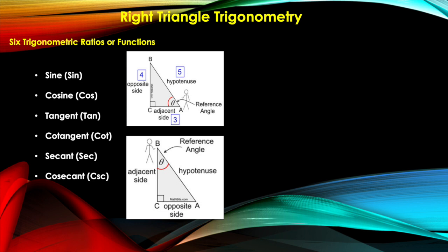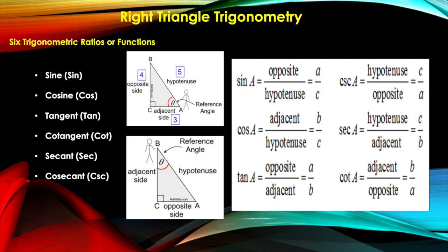Now let us define the six trigonometric ratios. Sine is defined as the ratio of the opposite side over the hypotenuse. The inverse of sine is cosecant, which is the ratio of the hypotenuse over the opposite side. These two functions are inverses of each other: opposite/hypotenuse and hypotenuse/opposite.